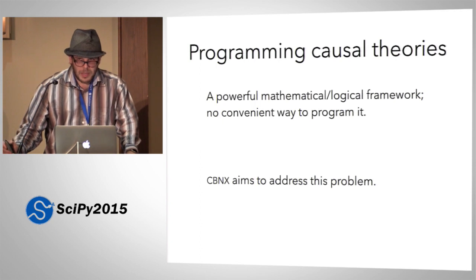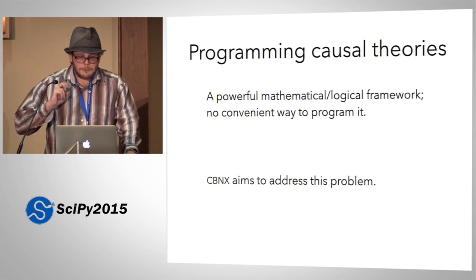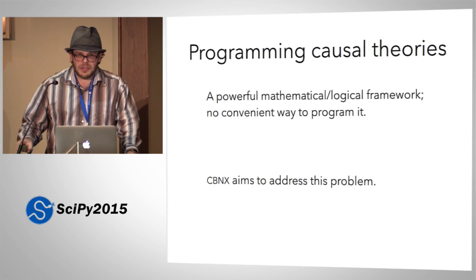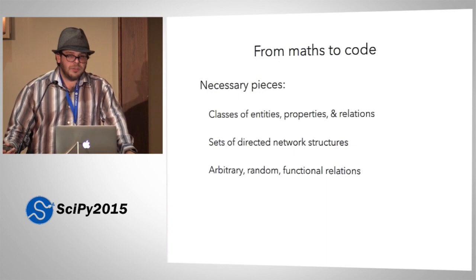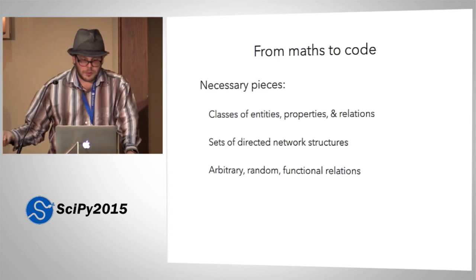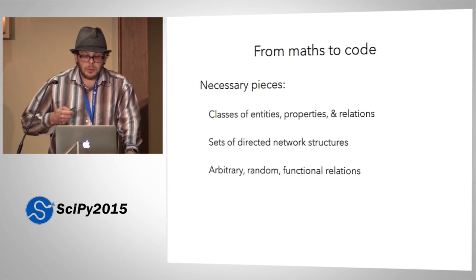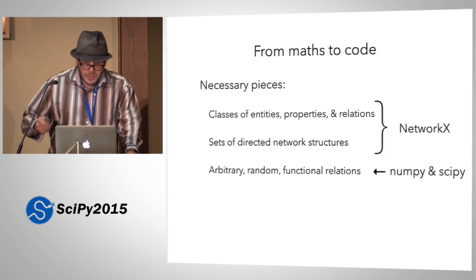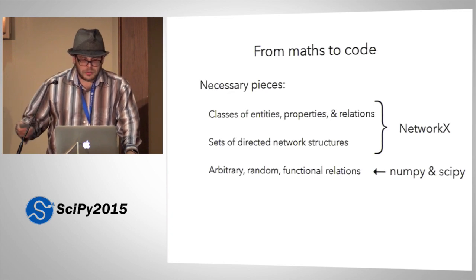This is a really powerful mathematical framework — I could go into many more details about continuous time, space, and so on. But right now there's no convenient way to program in it. Every one of these models has to be hand-built, and so CBNX is aiming to address that problem. Moving from math to code, we need classes of entities, properties and relations, sets of directed network structures, and arbitrary random functional relations. The first two are given to us nicely by NetworkX — which is where the X in the name comes from — and the last bit can be achieved using the random modules in NumPy and SciPy.